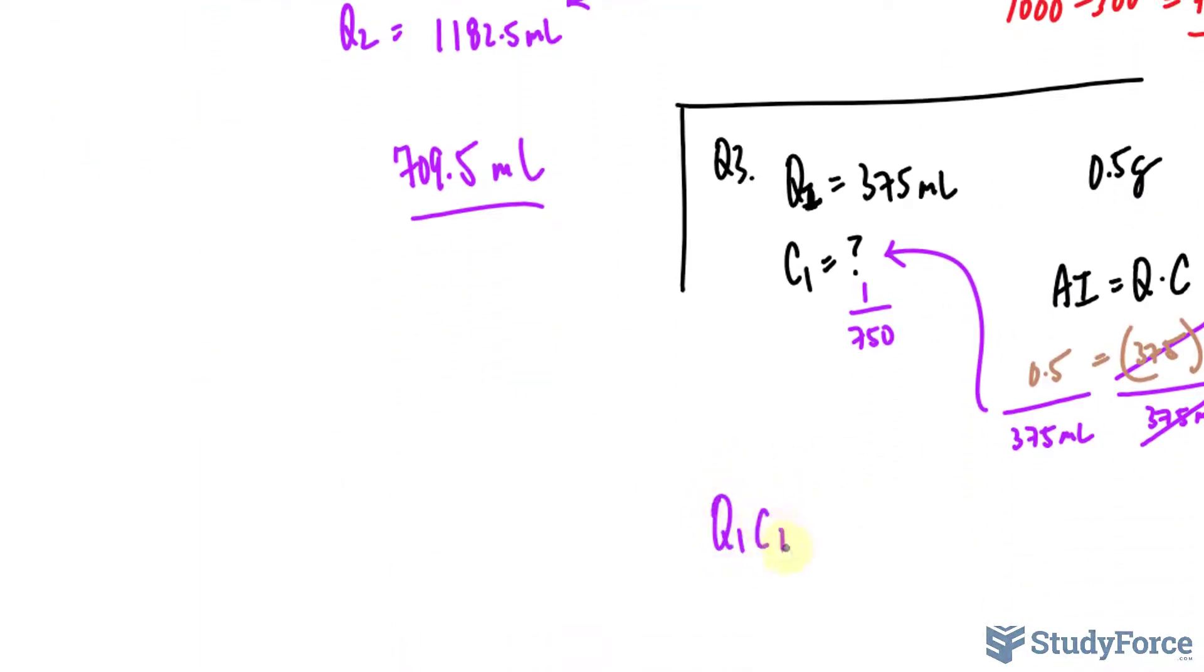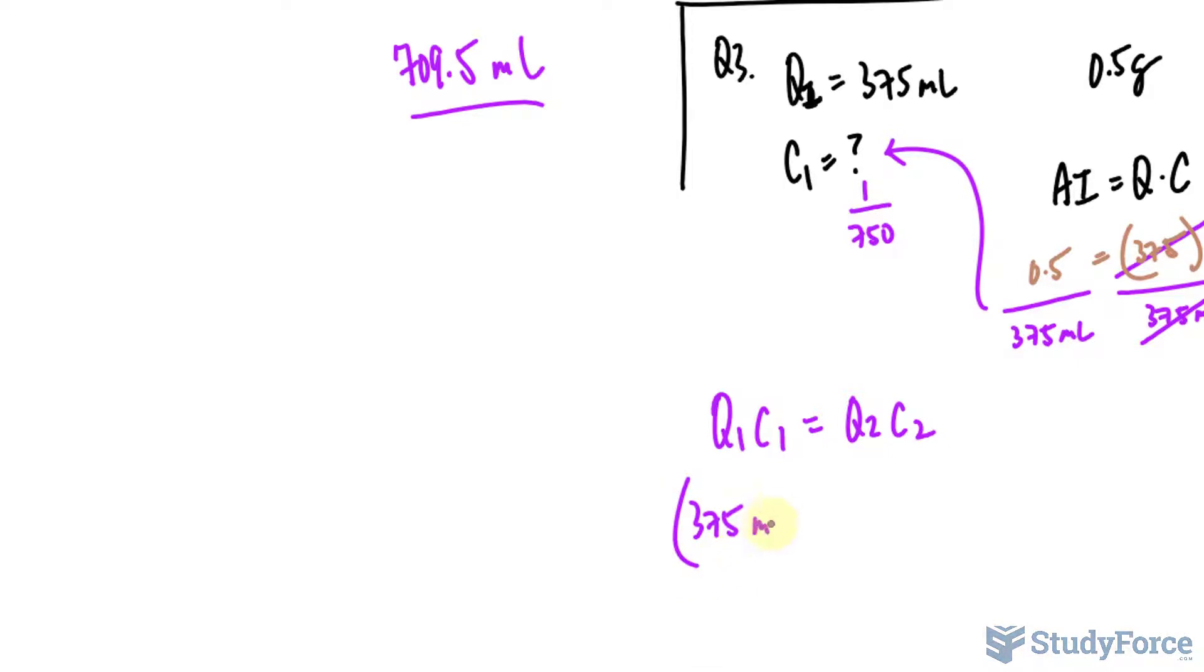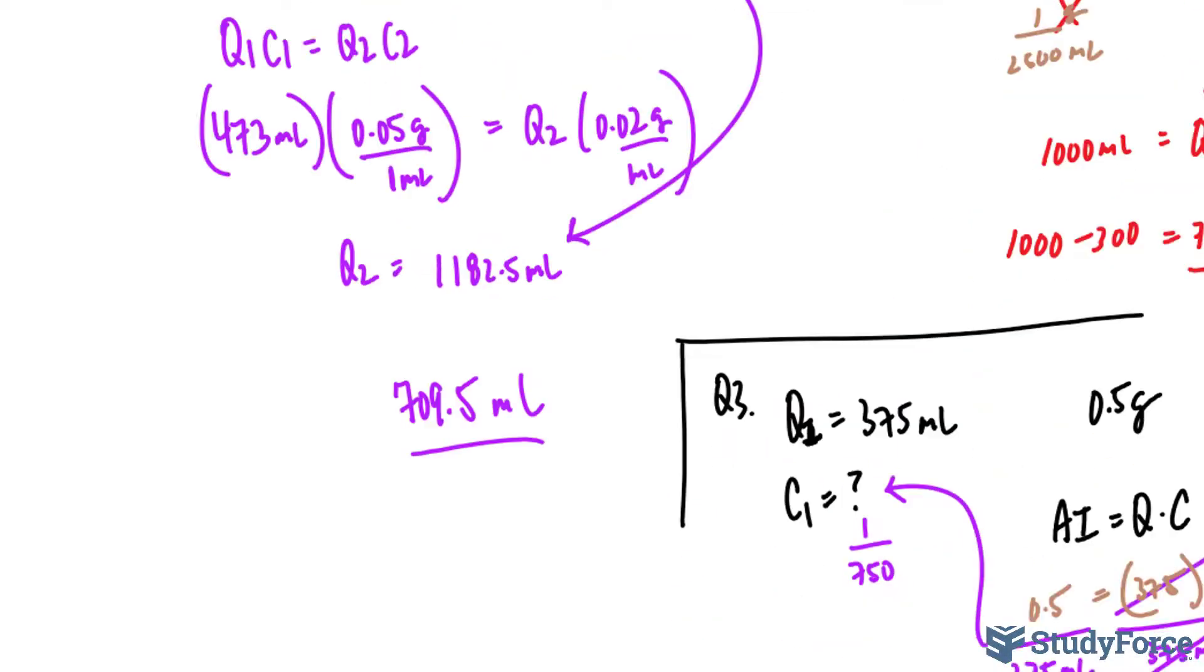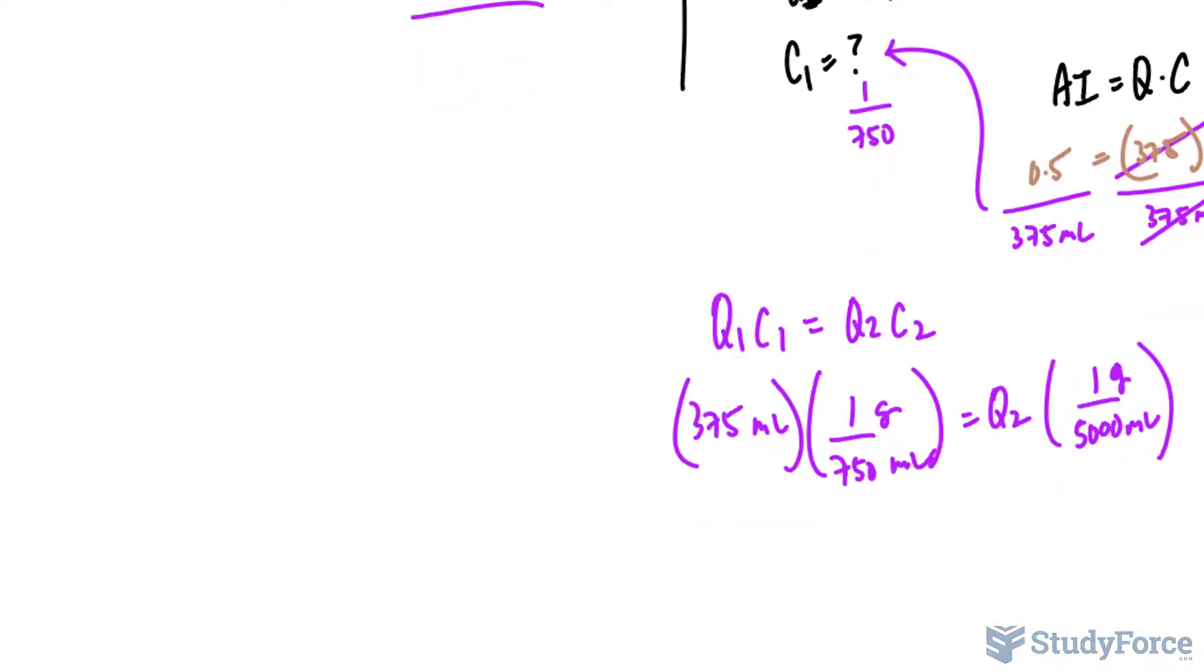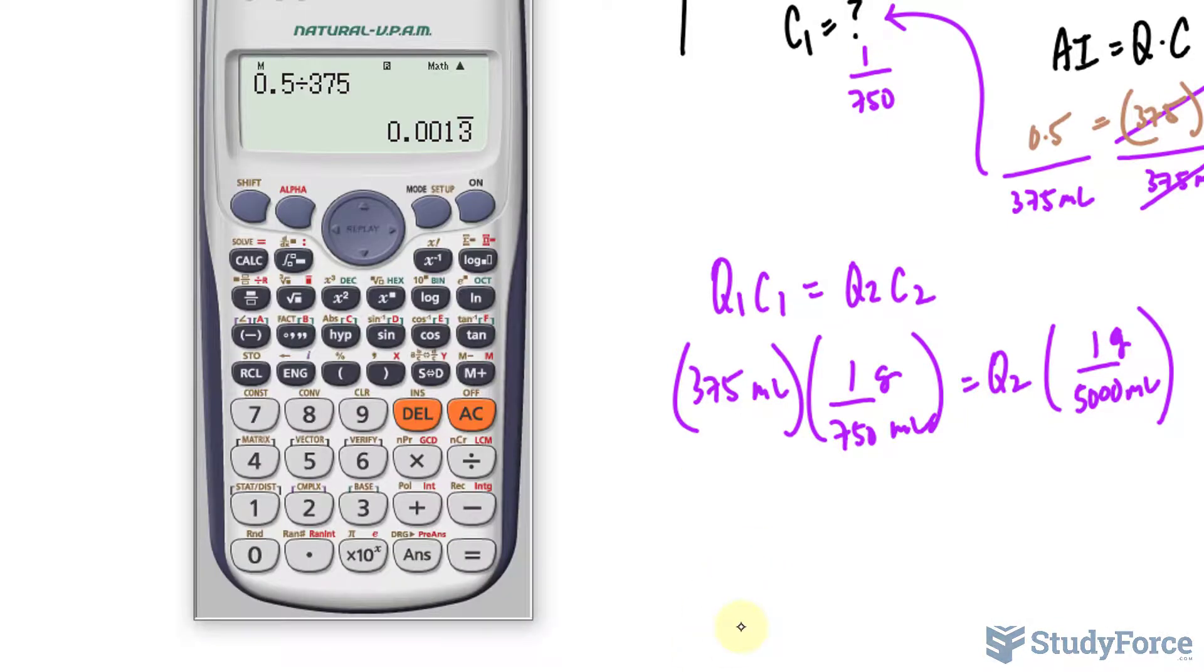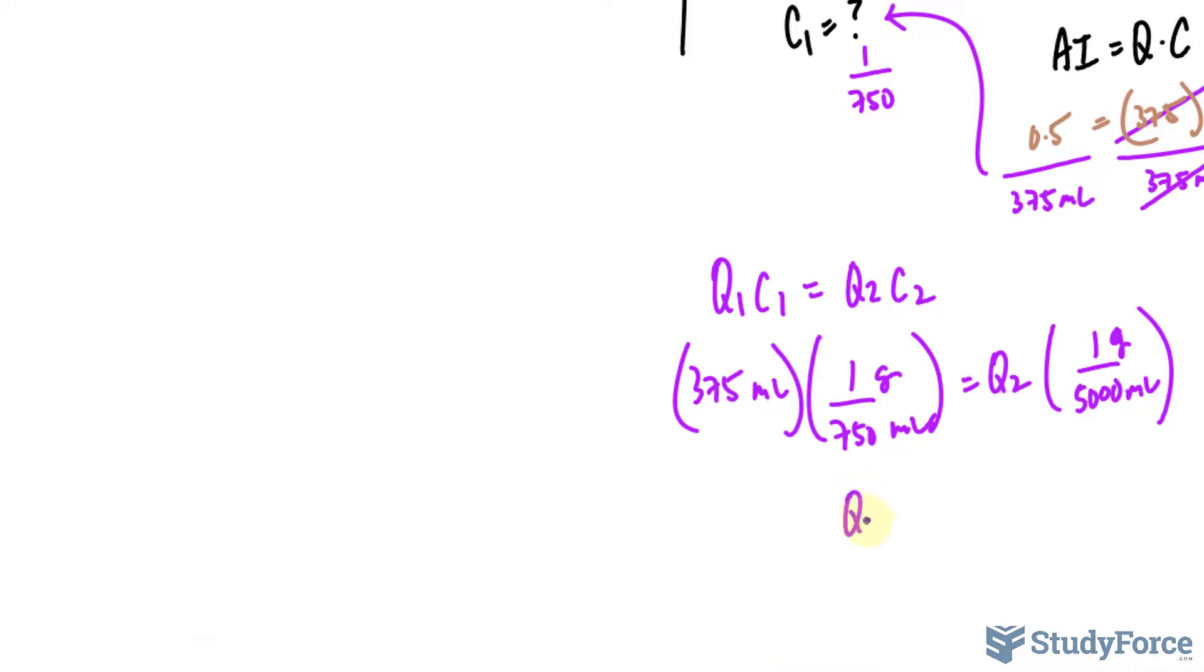And they want a new solution that has that concentration, way more diluted. So Q1C1 equals Q2C2. 375 milliliters, that's the quantity, times the concentration of 1 over 750 grams per milliliter, is equal to Q2, which is unknown right now, and the concentration is 1 over 5000 grams per milliliter. It's a weight per volume. Let's find out what Q2 is, using the same mathematical technique as before. 375 times 1 over 750, divided by 1 over 5000. And this gives us a quantity of 2500 milliliters, 2500 milliliters.